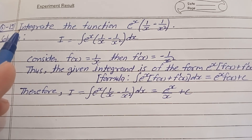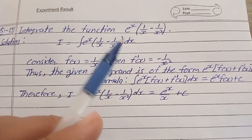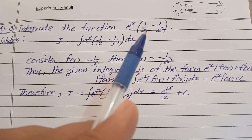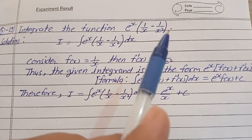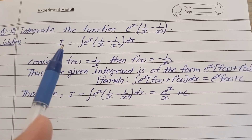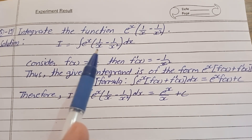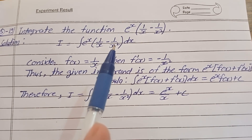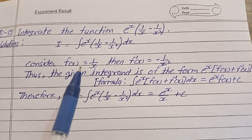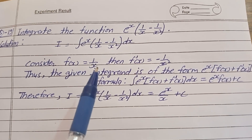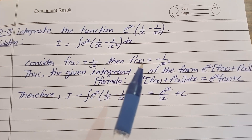Question number 19. Class 12, integrate the function e^x bracket 1 upon x minus 1 upon x square. Solution: take I is equal to integration e^x bracket 1 upon x minus 1 upon x square. Consider f of x is equal to 1 upon x, then f dash x is equal to minus 1 upon x square.